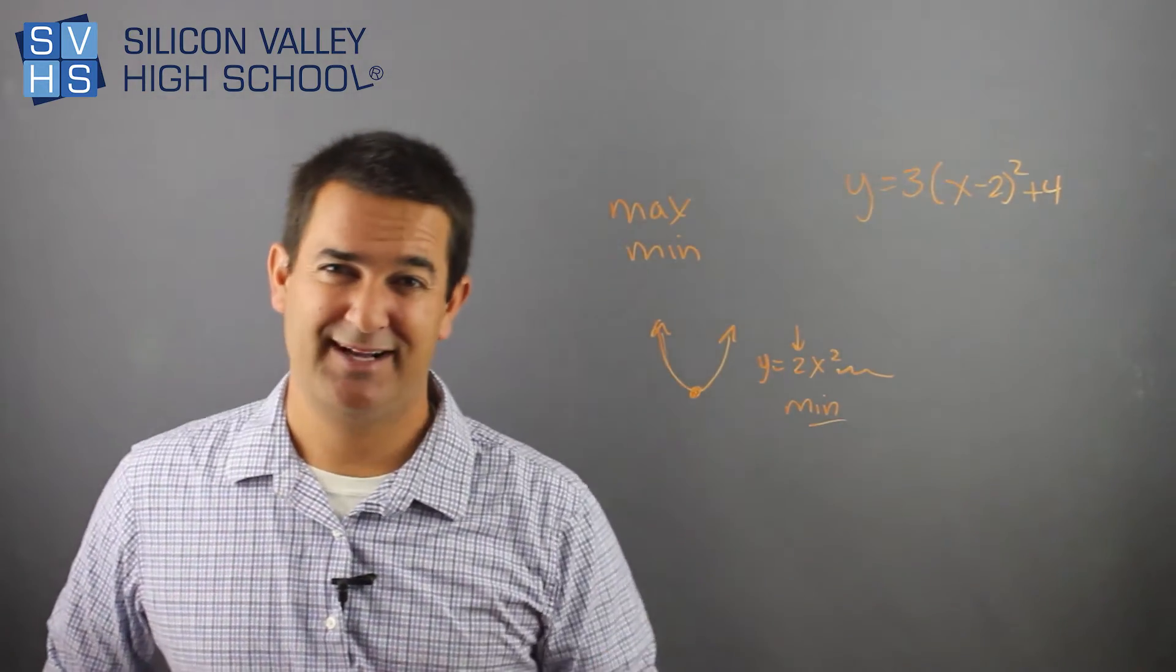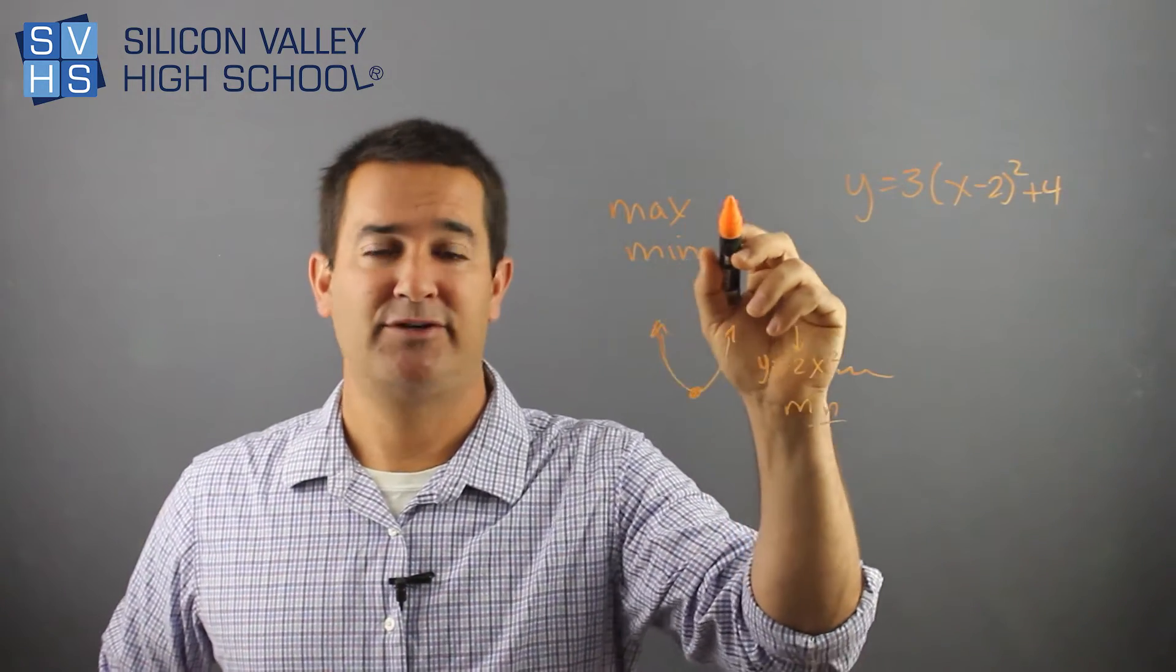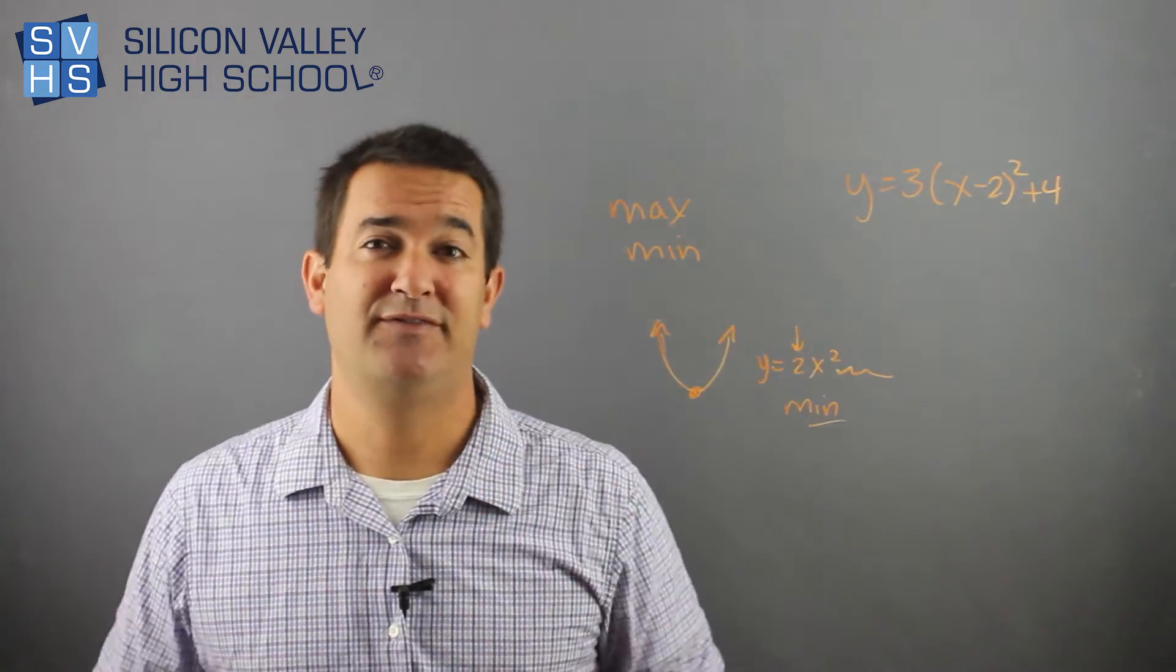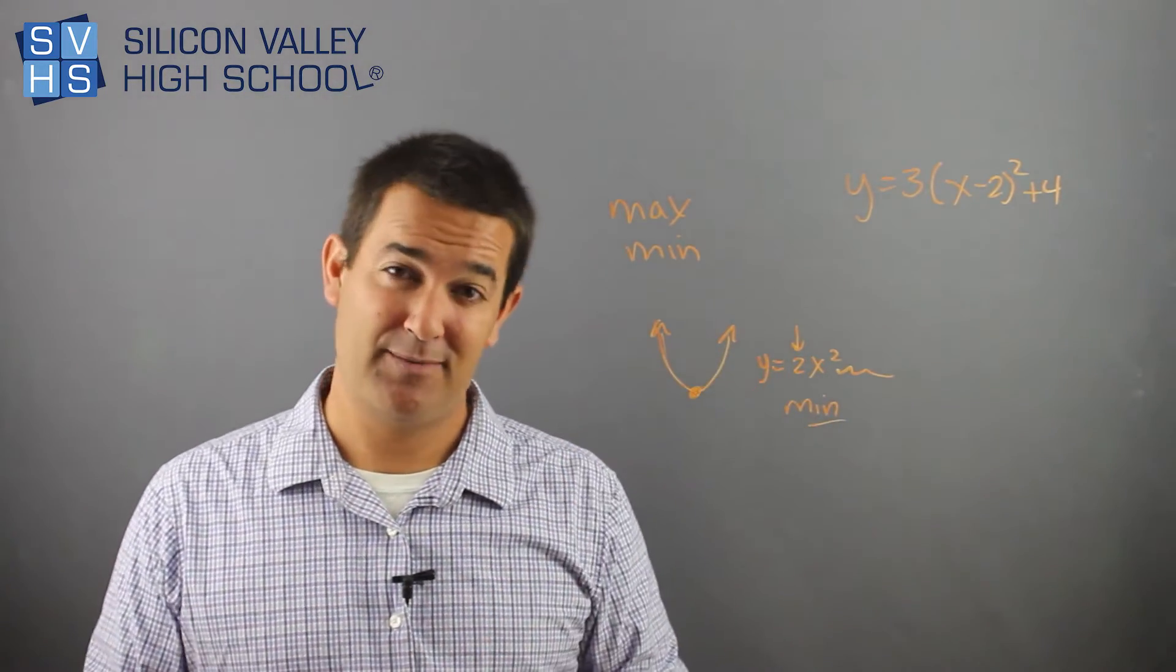Sometimes people give me shortcuts, but it just confuses you. They said every time you have a positive parabola, it's a minimum. Every time you have a negative parabola, it's a maximum. That's too confusing. Just sketch it out. Positive parabola looks like that. Yes, common sense, it's a min.